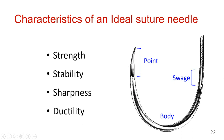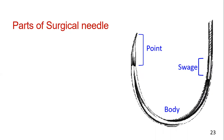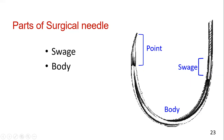Now we have to look at the parts of an ideal suture needle. Part number one is the swaged portion, which is where the thread is attached. The second part is the body. The third part is the point area.